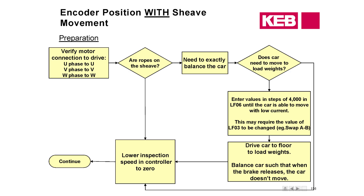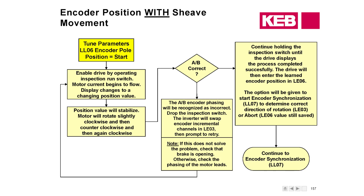One nice thing about the pole learn is that it automatically calculates the correct AB channel phasing for you — you don't have to manually select it or run to check if you're on the correct channel. The pole learn automatically does that, and it will tell you if you're on the wrong channel and make the change by itself, but it's up to you to do another SPI. Anytime you switch from a non-inverted channel to an AB-swapped setting, you need to do another SPI, because the position values are different for each channel.